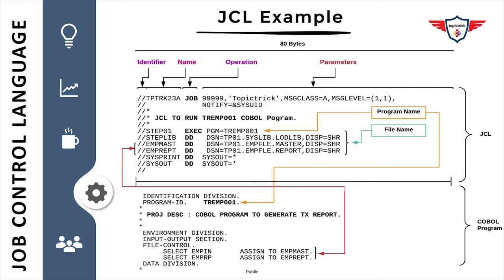Looking at the lower section of the screen, there's a small snippet of the COBOL program showing how it is mapped to the JCL DD statements. The program name is TR-EMP-001, which is used in the EXEC statement to specify the program to run. In the file control section, there are two files: EMP-IN, which is mapped to the DD name EMP-MAST, and EMP-REPT, which is the report assigned to the DD name EMP-REPT. This is how the DD name in the JCL is mapped to your COBOL program.